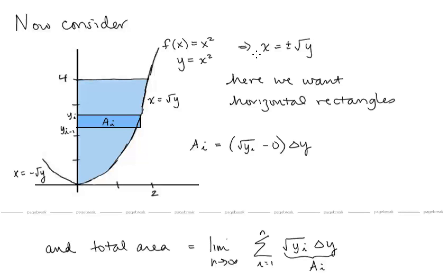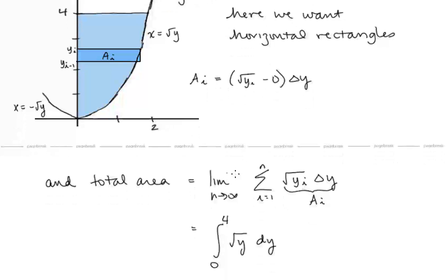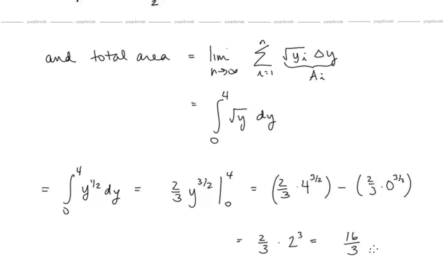We want to solve for x as a function of y. Here x equals positive or negative radical y, which tells us that one branch of the parabola is x equals radical y. The area of the rectangle for the Riemann sum would be radical y_i multiplied by delta y, so the total area is the integral from 0 to 4 of radical y with respect to y. Integrating, we get 16 thirds.